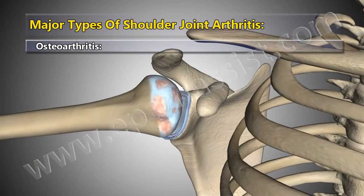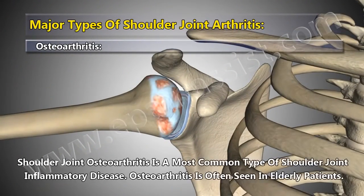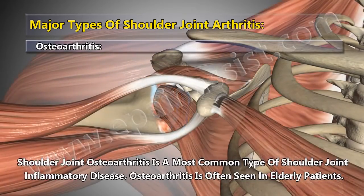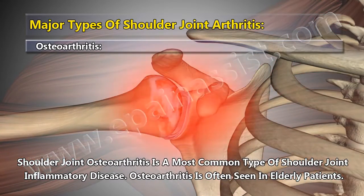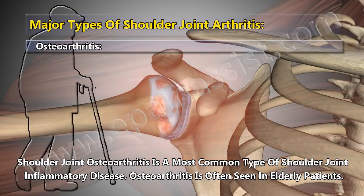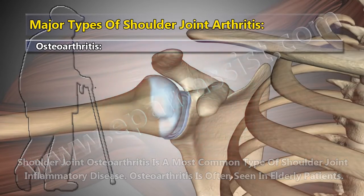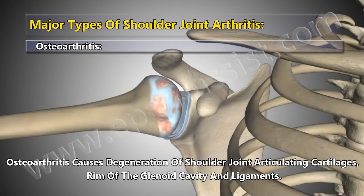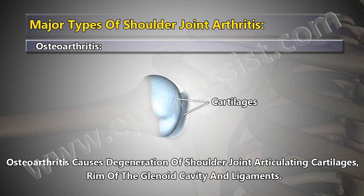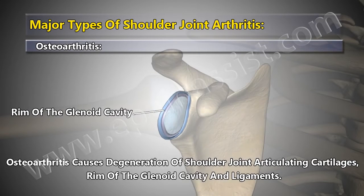Shoulder Joint Osteoarthritis is the most common type of shoulder joint inflammatory disease, and is often seen in elderly patients. Osteoarthritis causes degeneration of the shoulder joint articulating cartilages, the rim of the glenoid cavity, and ligaments.